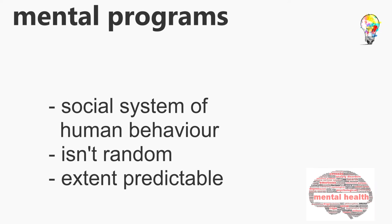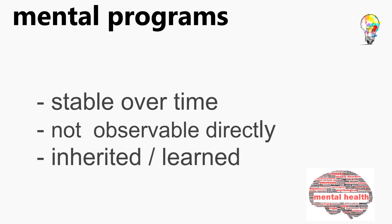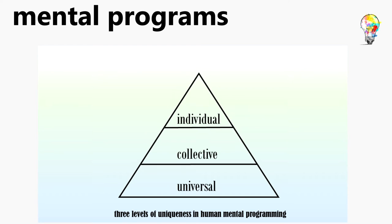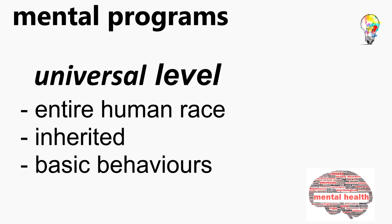Mental programs are a social system that only exists in human behavior — it is not random and to some extent predictable. Each prediction contains information about the person and the context, while mental programming is stable over time. These programs can't be observed directly; they are inherited, transferred via genes and can also be learned after birth. Hofstede differentiates three levels of mental programming: universal, collective and individual. The universal level is shared by all mankind, is a biological operating system which contains basic behaviors and is inherited.